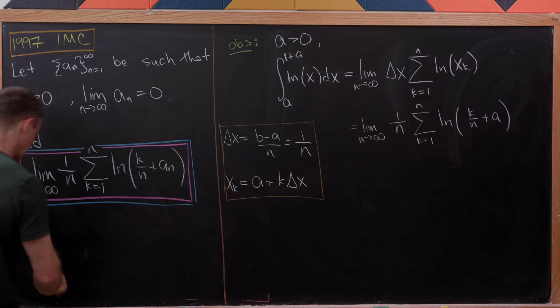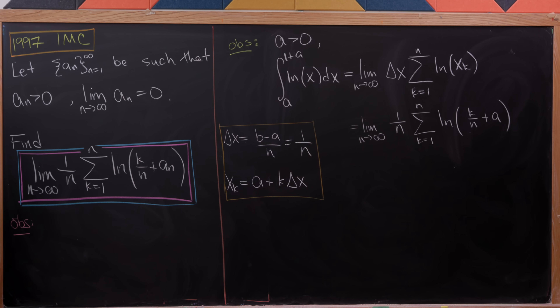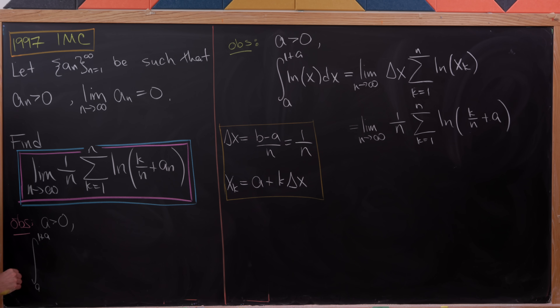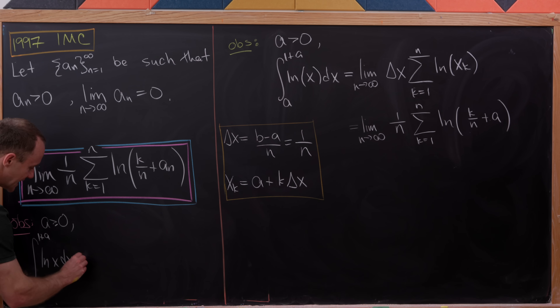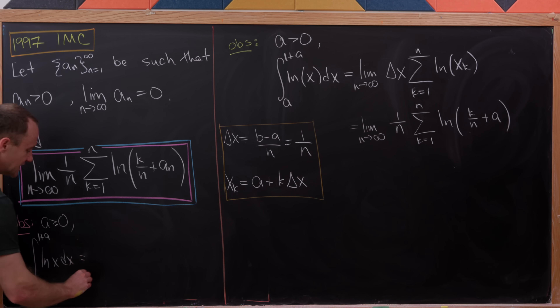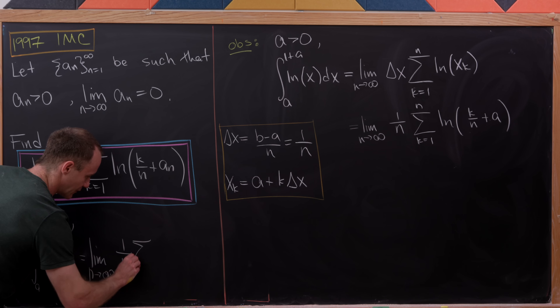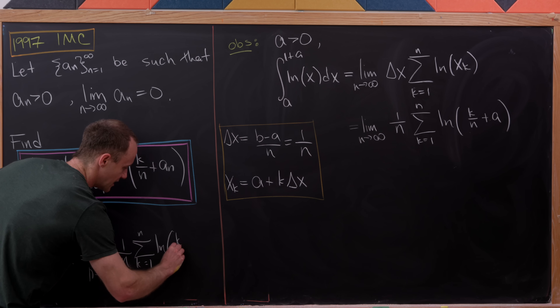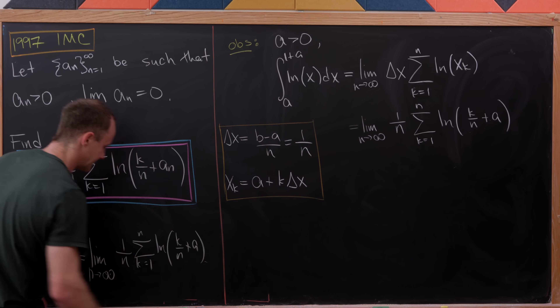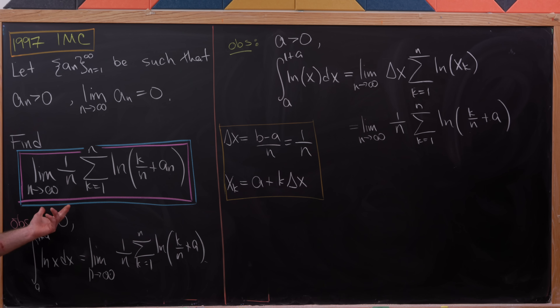So we can write this down: the integral from a to one plus a of ln(x) dx equals the limit as n goes to infinity of one over n times the sum as k goes from one to n of the natural log of k over n plus a. Notice this uses a fixed a, but in our problem we have a variable a_n that changes for every term of the sum — that's what makes this sticky.